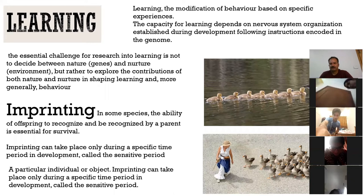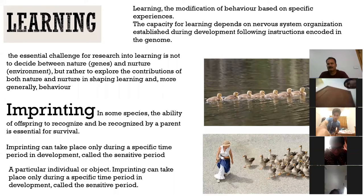Rather than going into the disagreement of these two schools of thought, both nature and nurture are shaping learning. Nature and environment both play a vital role in the learning of individual behavior. Animals have a capability to recognize their offspring, and offspring also have a capacity to recognize their parents for parental care. The next type is imprinting behavior, which generally operates at the time of birth or when a chick hatches from eggs. Imprinting takes place at a specific time period, known as the sensitive period.